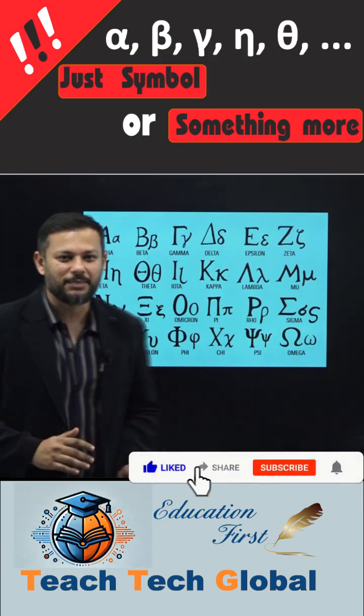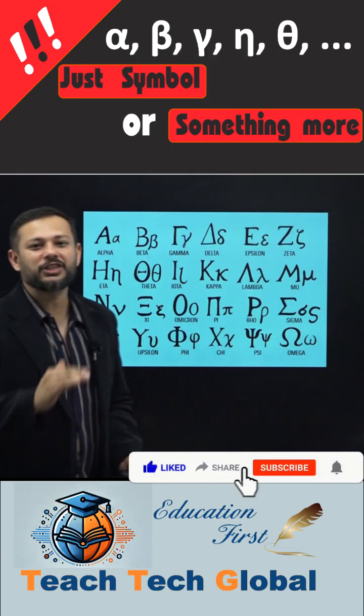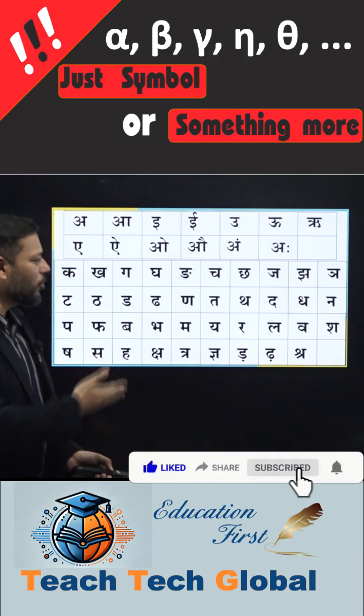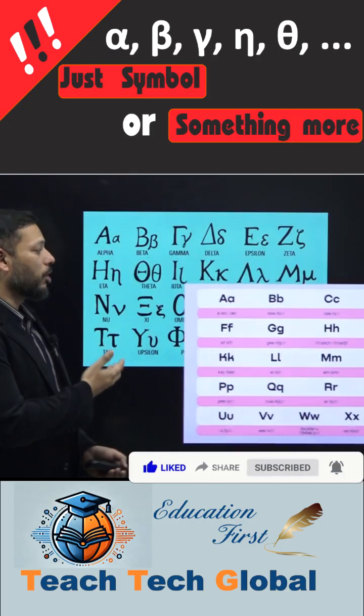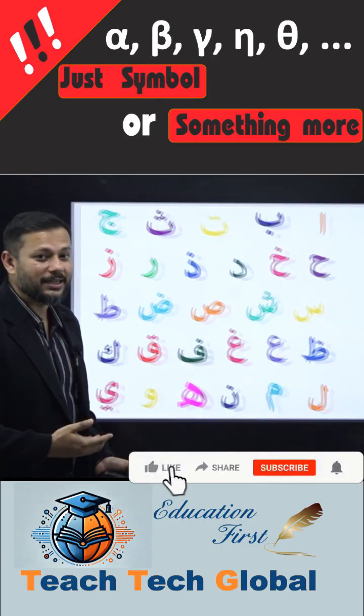They are not just only the symbols. They belong to a very ancient language. The languages as we know Hindi, it has around 52 letters. We know about English, it has around 26 letters. We know about Arabic, it has around 28 letters.